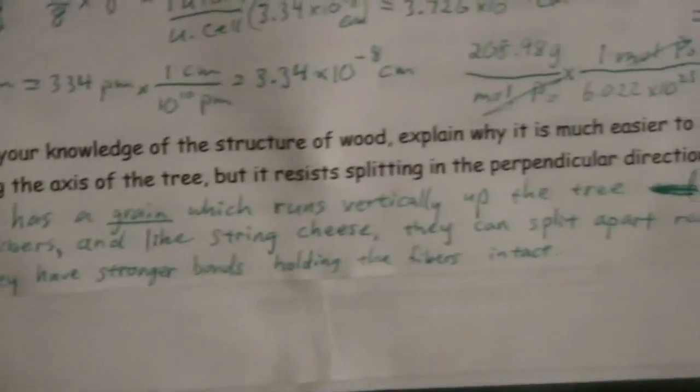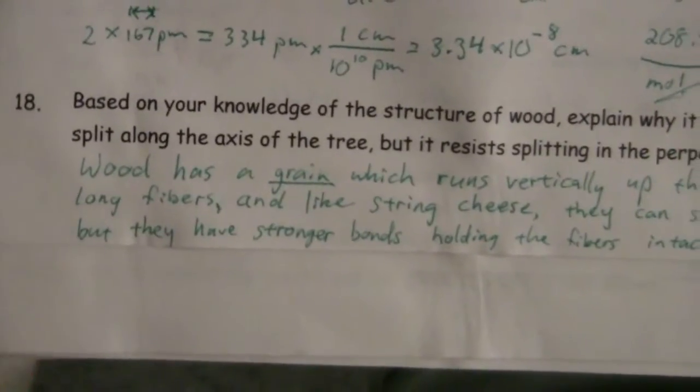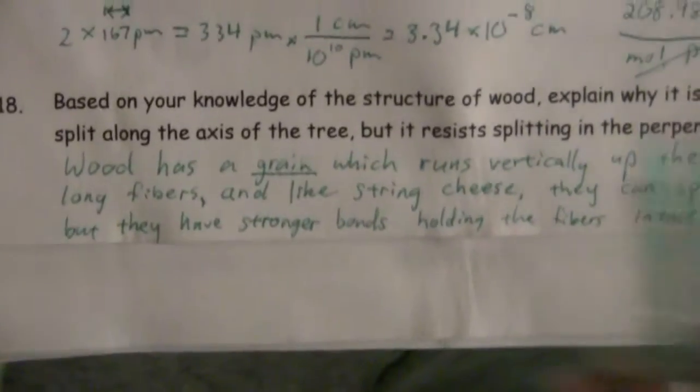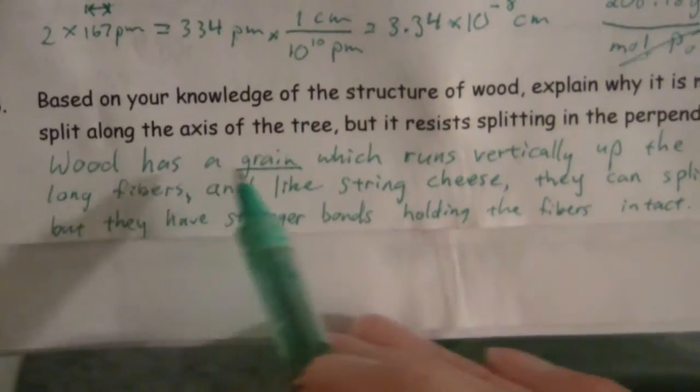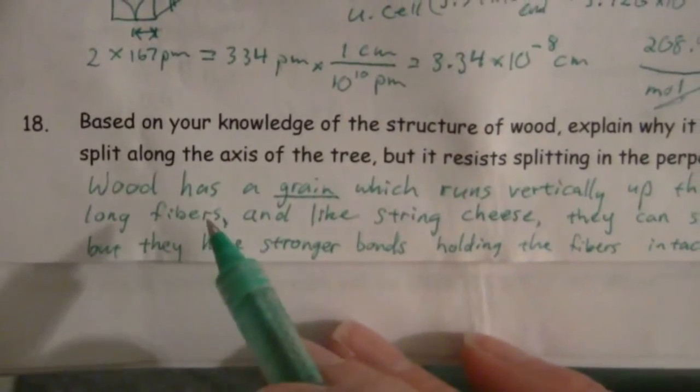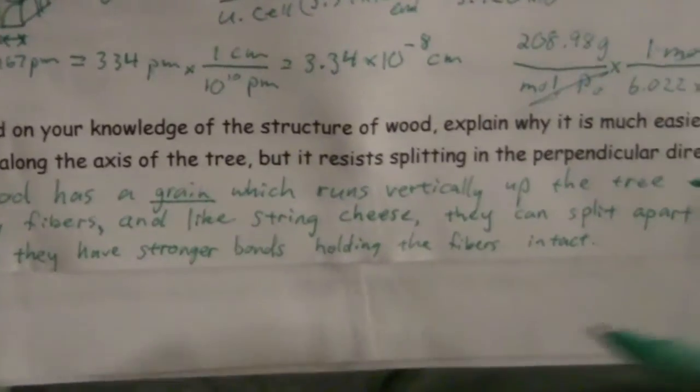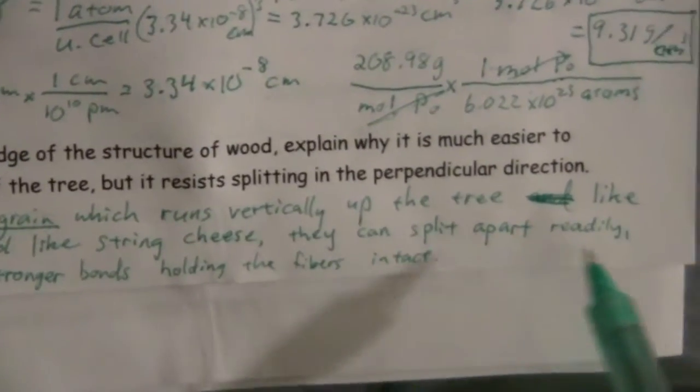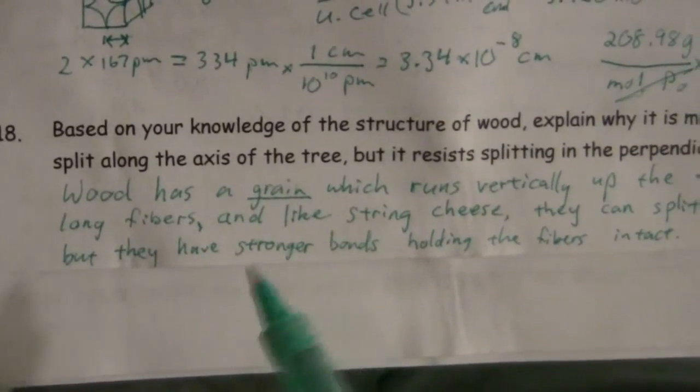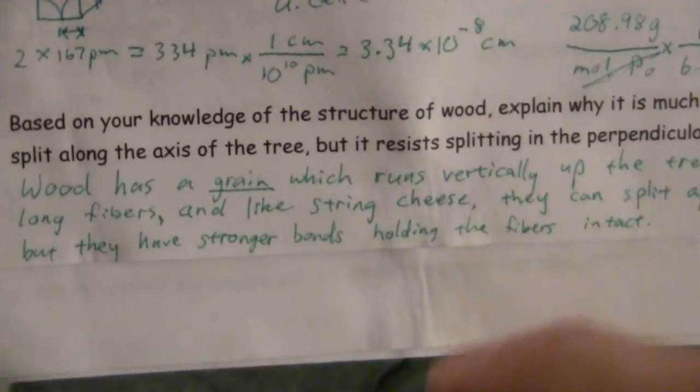but it resists splitting in the perpendicular direction, that is across the tree. So what we're looking at here, the main thing is wood has a grain. That grain runs vertically up the tree like long fibers. And just like string cheese, you can peel it along that direction